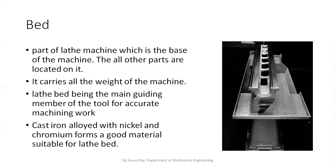Now I am coming to my next slide: the bed. Basically, the bed is made of cast iron alloyed with nickel. The entire carriage and the weight located on this bed — it has to carry the total weight. So this is the main part of the lathe.